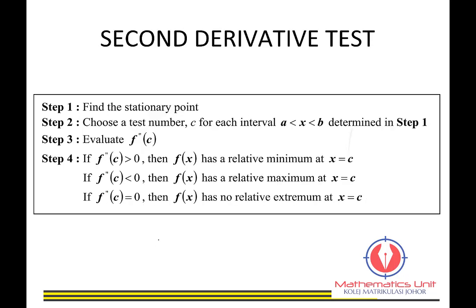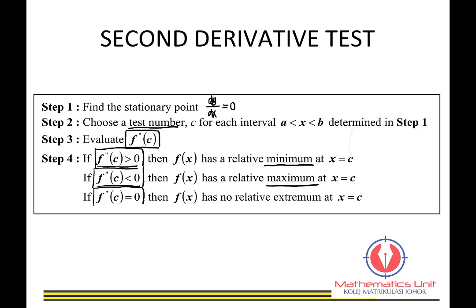For the second derivative test, there are also four steps. First, find dy/dx and equate it to zero to get the stationary point. Next, choose a test number between the interval, then evaluate the second derivative by differentiating a second time. There are three outcomes: if the second derivative is greater than zero, f(x) has a relative minimum at x equals c; if less than zero, f(x) has a relative maximum at x equals c; if equal to zero, f(x) has no relative extremum at x equals c.